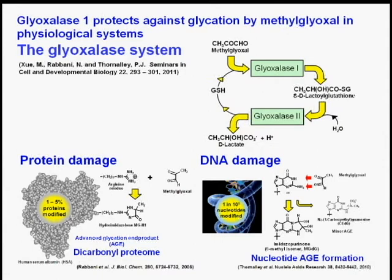Modification of protein produces a major adduct called a hydroimidazolone, and proteins that are susceptible to this modification we call the dicarbonyl proteome. Modification of DNA occurs at deoxyguanosine residues and produces an adduct called an imidazopurinone. This is a quantitative form of DNA damage endogenously in physiological systems. The glyoxalase system protects against this damage by metabolizing over 99% of methylglyoxal.